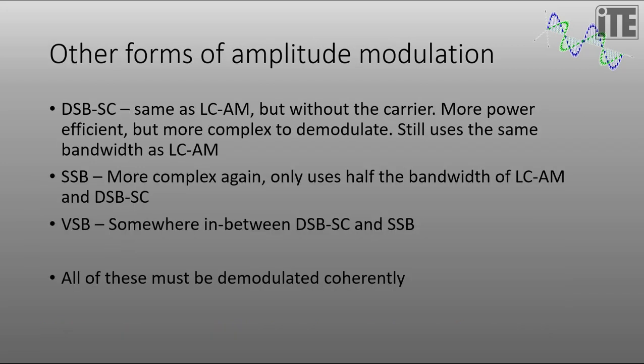I mentioned there's other forms of amplitude modulation. There's double sideband suppressed carrier, and that's the same as large carrier AM but without the actual carrier present. Now that is much more power efficient. 100% of the power goes into the information bearing component of the signal, but it must be demodulated coherently. And what that means is we need to have a circuit which recovers the carrier signal and then uses that to demodulate at the receiver. But it still uses the same bandwidth as large carrier AM.